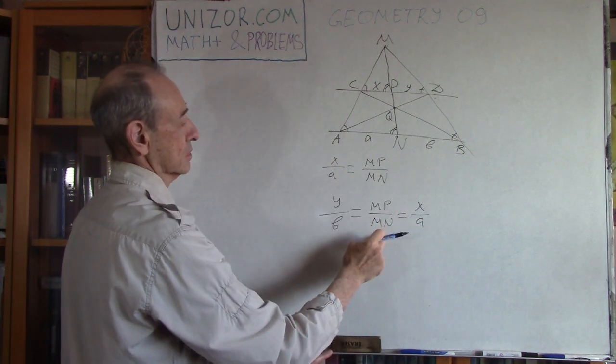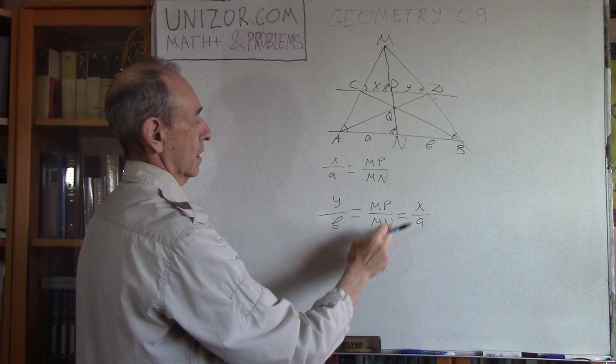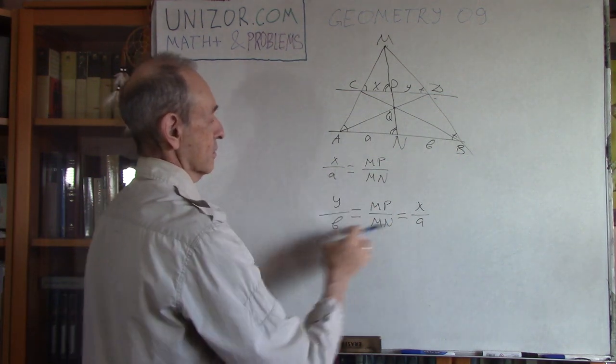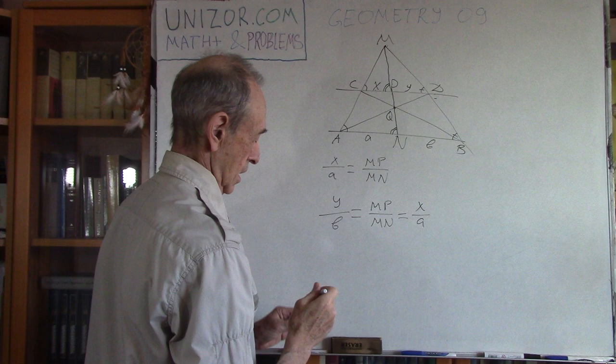And from which we have that this is X over A. MP to MN is exactly the same, so these are the same.